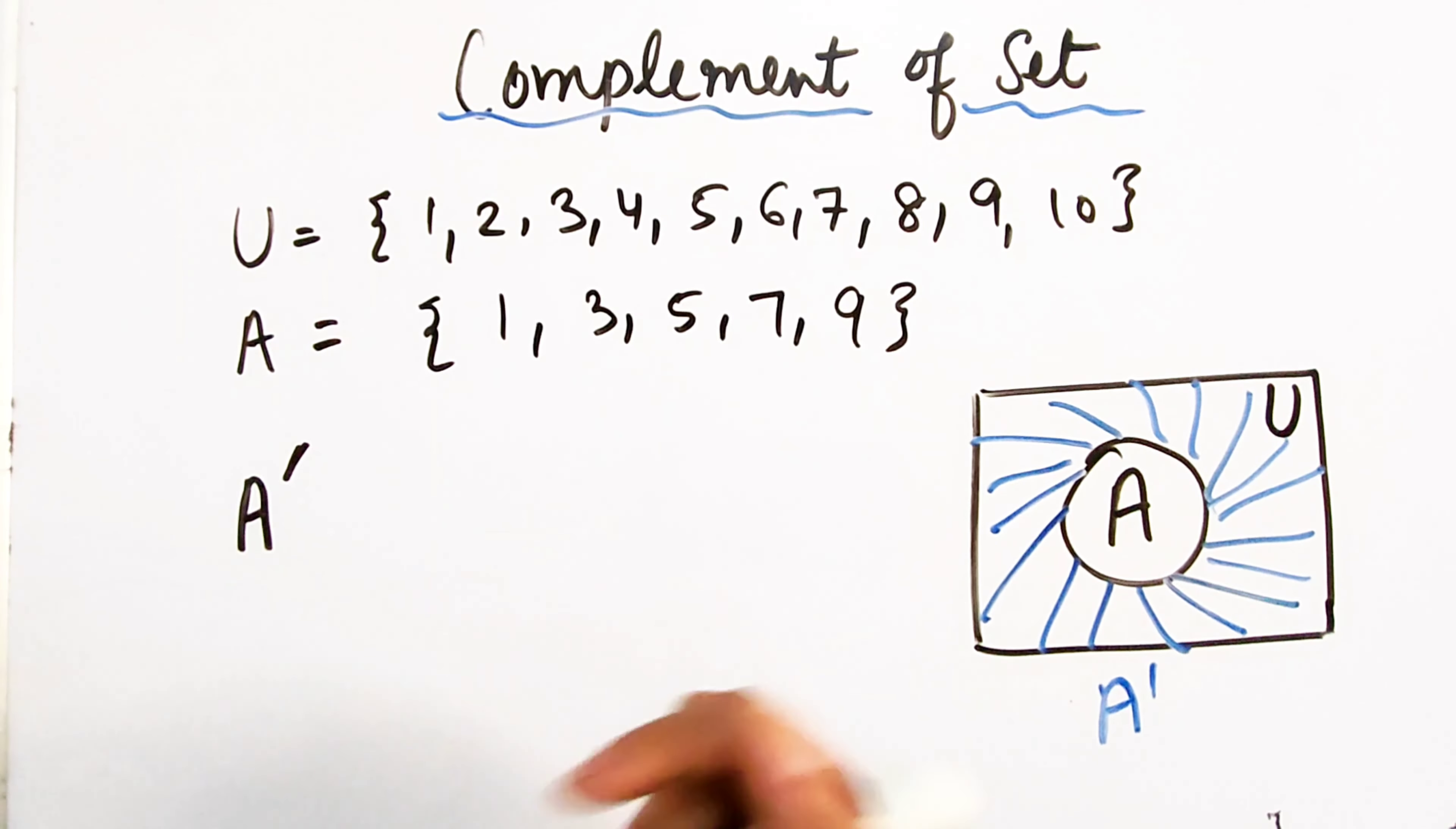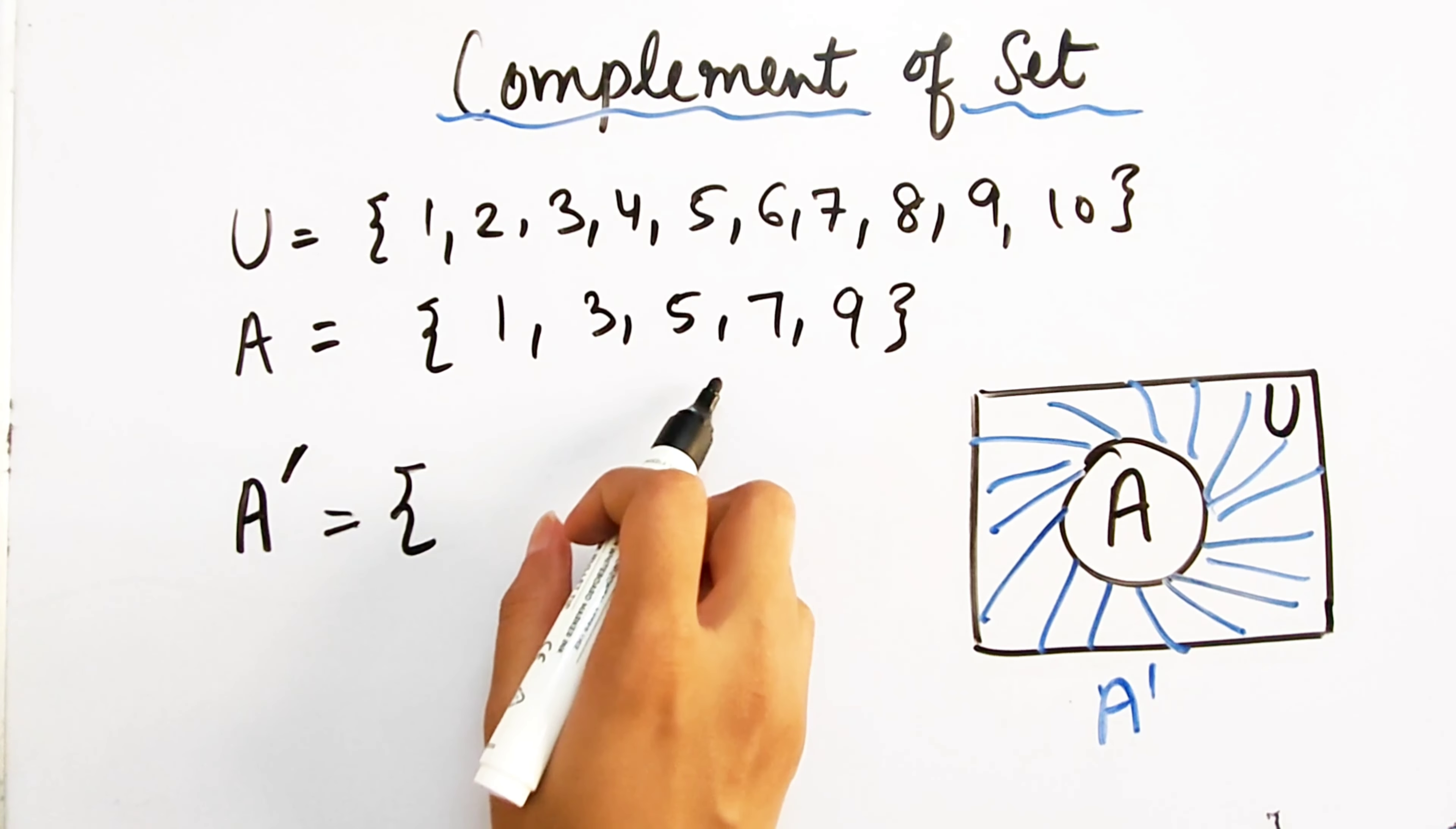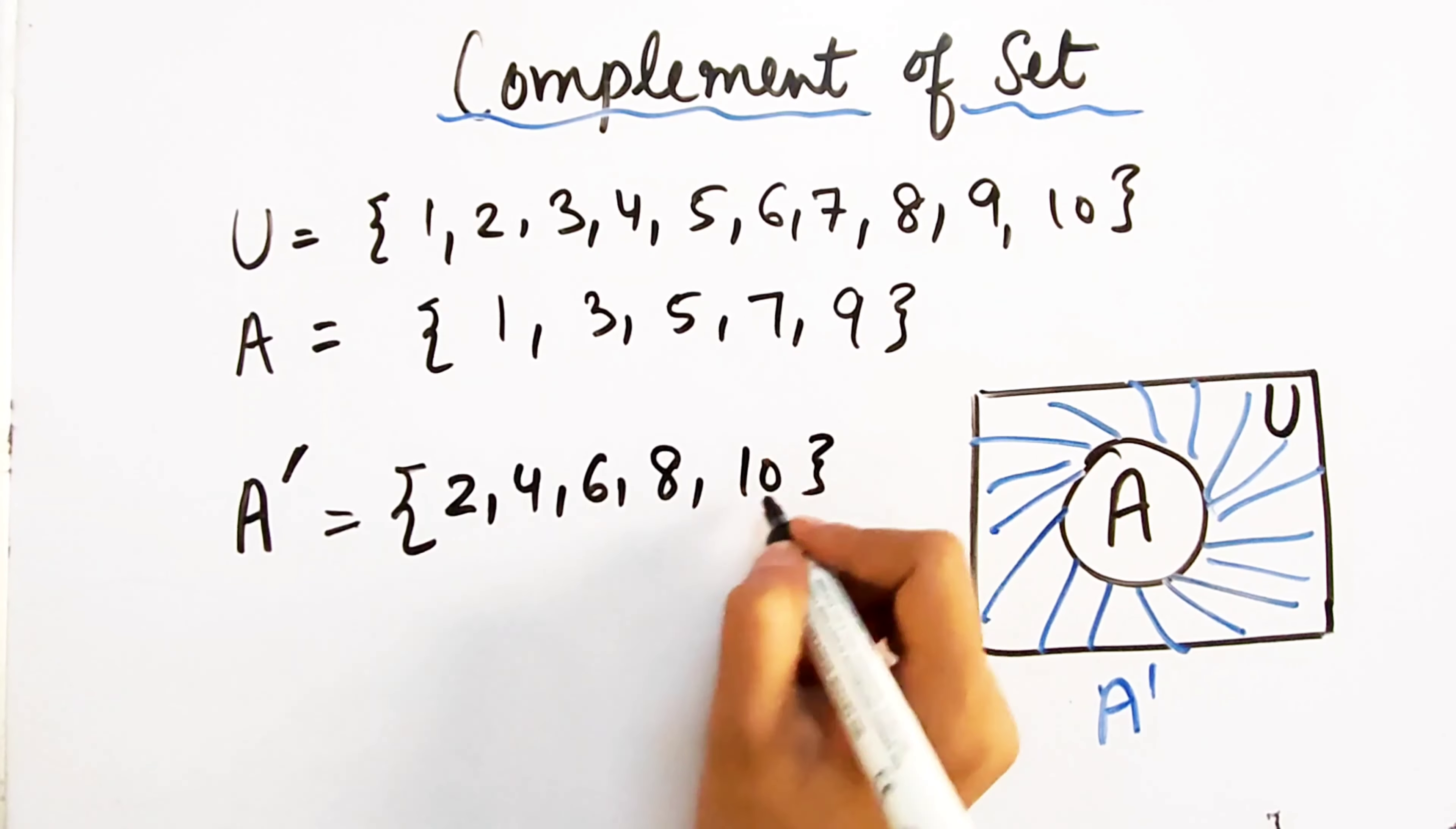Now, let's see. You can easily make it here. Which elements will come in? All elements that belong in union but we don't belong in A. Which elements? 2, 4, 6, 8 and 10.